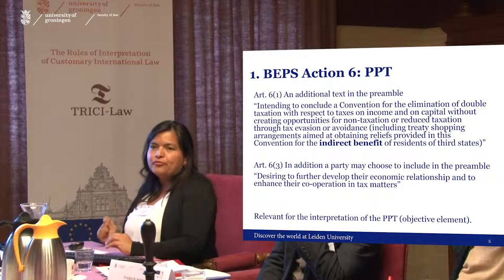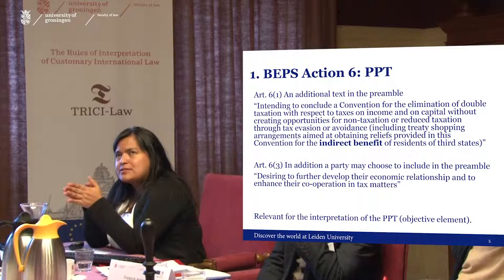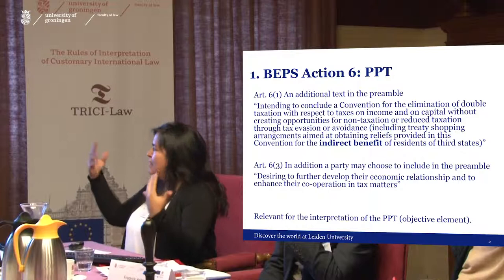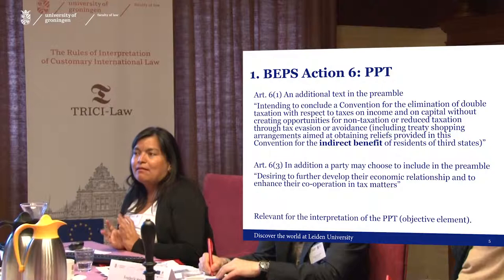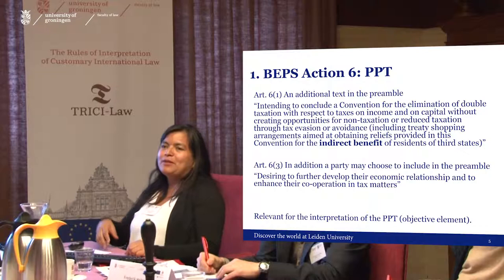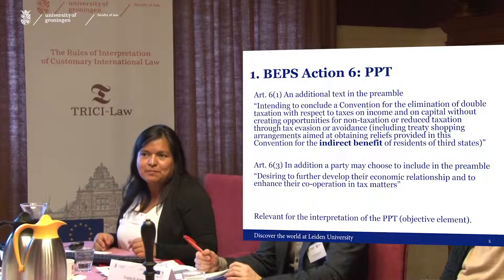This creates a situation where, even if an arrangement does not result in double non-taxation, it may still be acceptable — as in the case of India — because you need to develop economic cooperation and maintain an economic relationship. Treaty shopping through India via Mauritius is a well-known example. India didn't want Mauritius to be seen as facilitating treaty shopping. This is a very political matter.